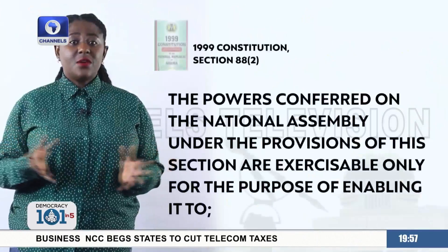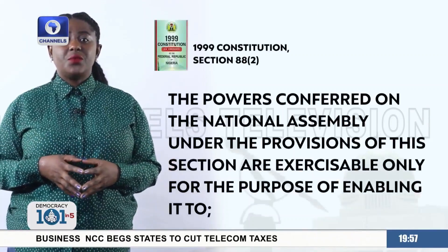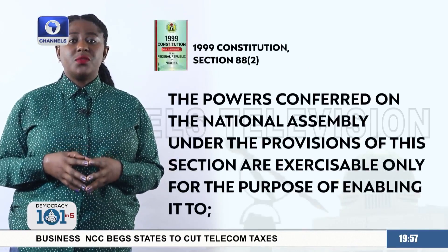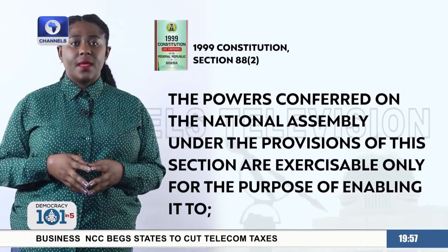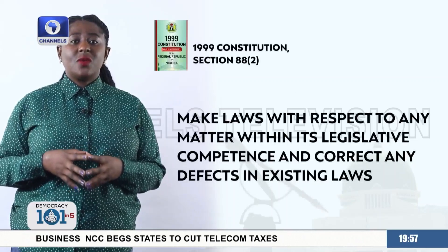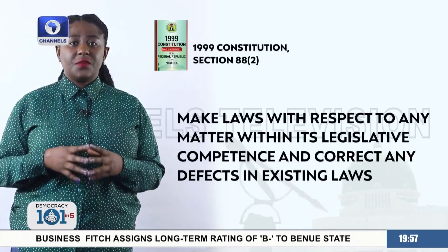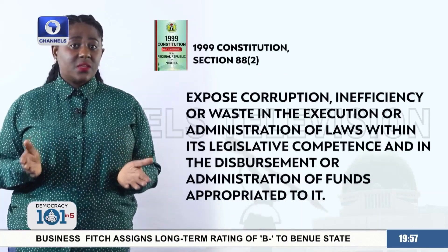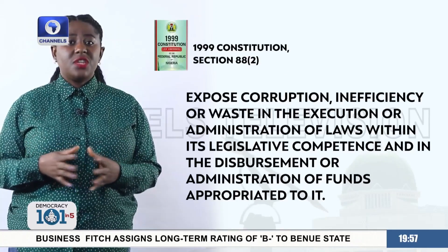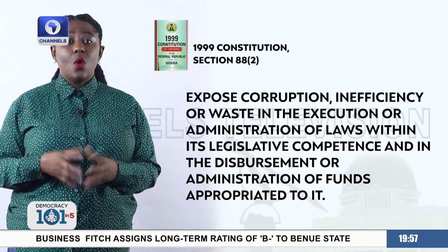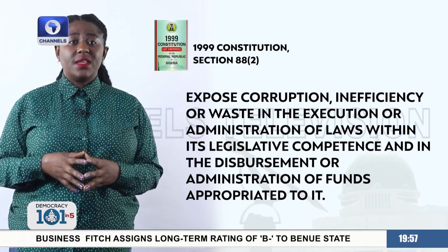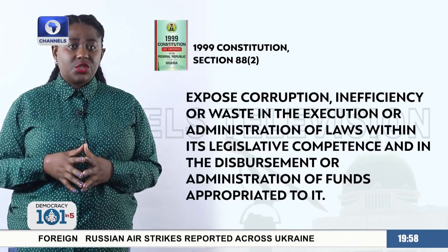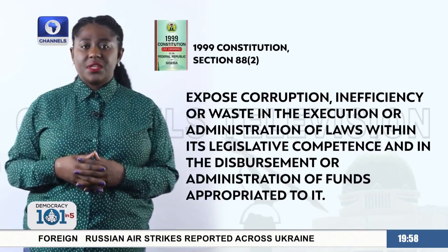It says: the powers conferred on the National Assembly under the provisions of this section are exercisable only for the purpose of enabling it to do the following — make laws with respect to any matter within its legislative competence and correct any defect in existing laws; expose corruption, inefficiency, or waste in the execution or administration of laws within its legislative competence and in the disbursement or administration of funds appropriated to it.